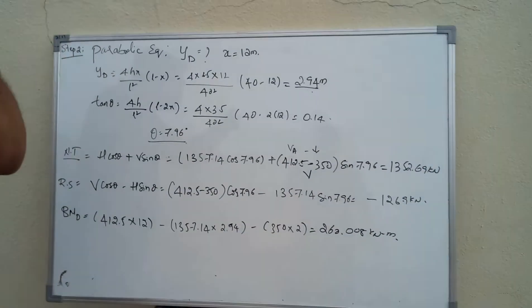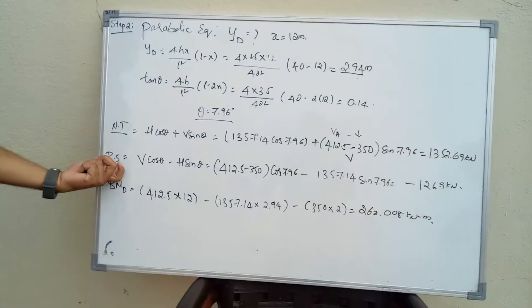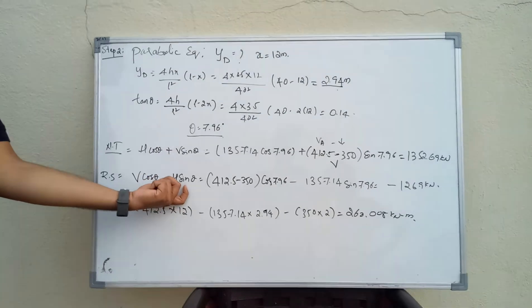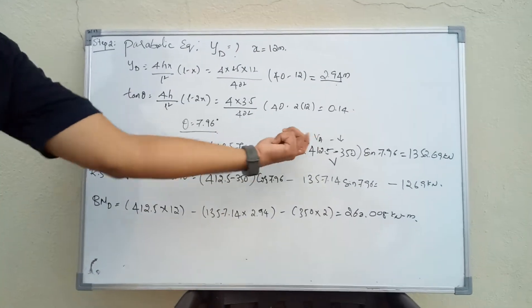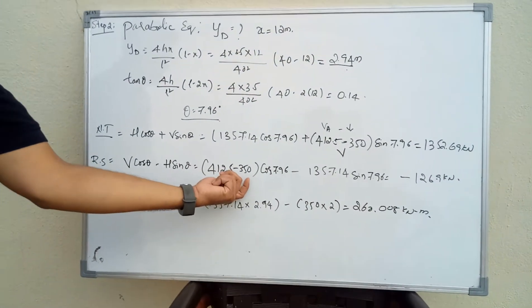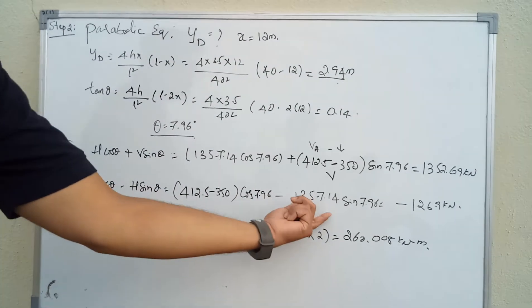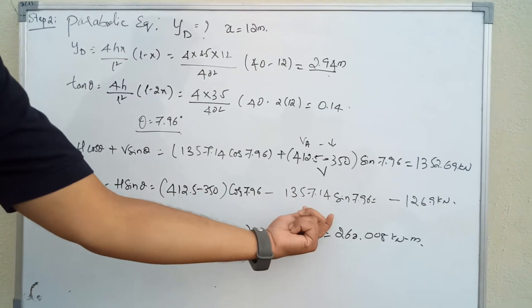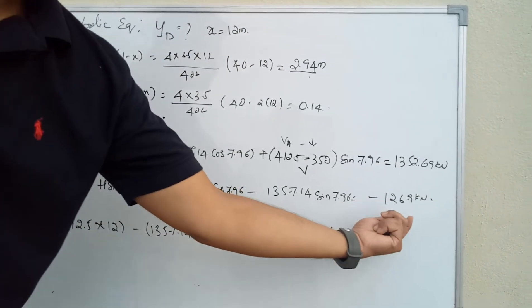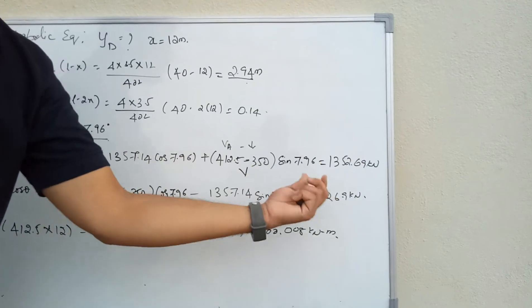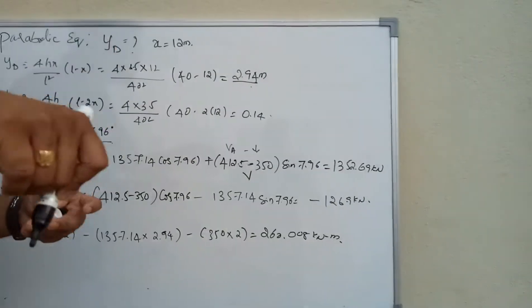For radial shear: V cos theta minus H sin theta. We got 412.5 minus 350, that is the net value, times cos theta minus H times sin theta. The answer is minus 126.9 kilonewtons. Minus indicates it is acting downwards.